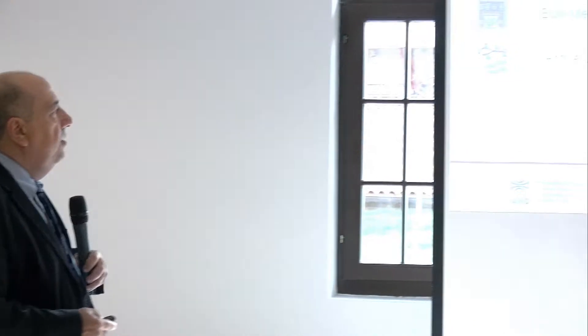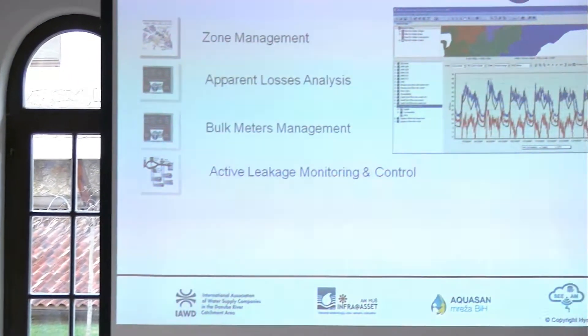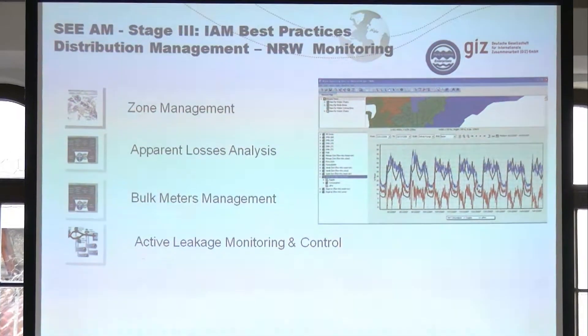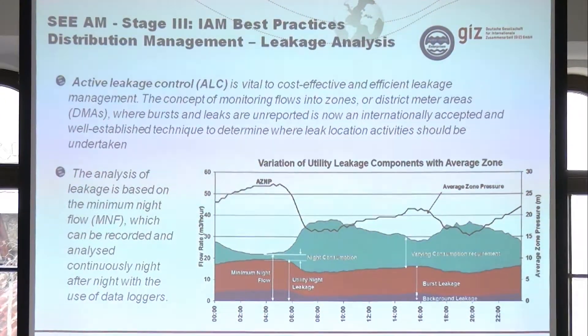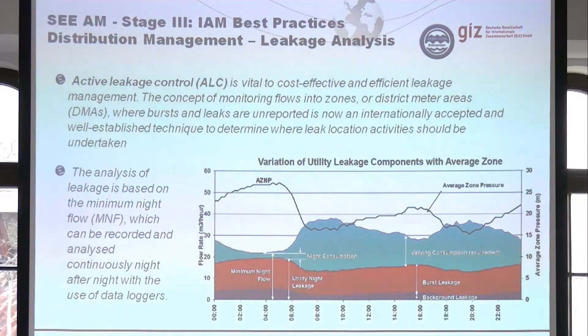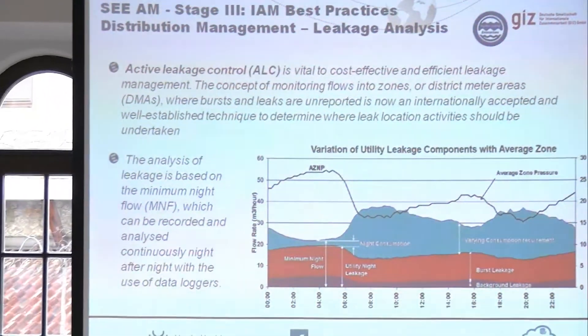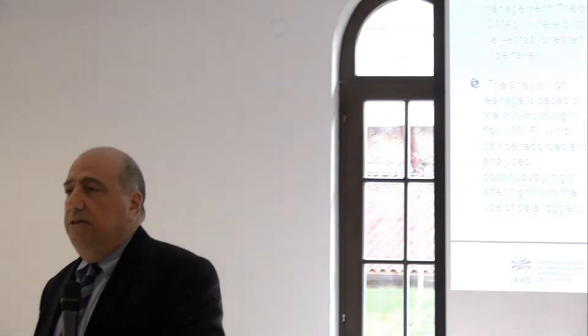Here we're discussing a monitoring system. It involves apparent loss analysis, bulk meter management as discussed before, and the IWA-encouraged process called active leakage management — cost-effective and efficient leakage management. Whoever has any form of telemetry or proper recording of bulk metering, that will also come out of zoning recommendations on how to do proper metering. Zoning is the background of it again.